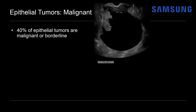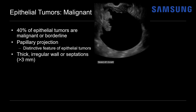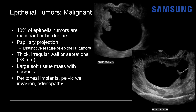About 40% of epithelial tumors will be malignant or borderline. Borderline tumors have low malignant potential, and a distinctive feature is the presence of papillary projections, as seen in our case. There is also greater likelihood of irregular wall thickening or thickened septations. Malignant tumors can also present as a large soft tissue mass with necrosis. Once the malignancy spreads, peritoneal implants, pelvic wall invasion, adenopathy, and ascites may also be seen.